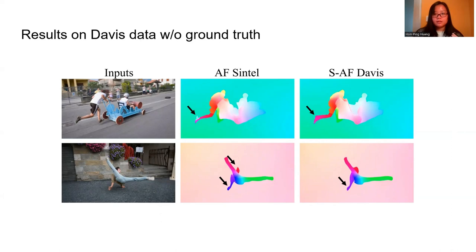Because the Autoflow model is learned from synthetic data with ground truth, it cannot generalize well to the Davis data due to the domain gap. Our Self-Supervised Autoflow, learned from the unlabeled Davis data, predicts more accurate flow.